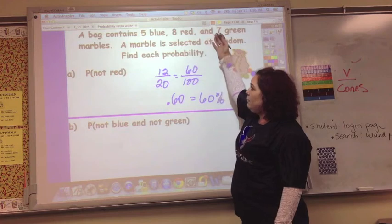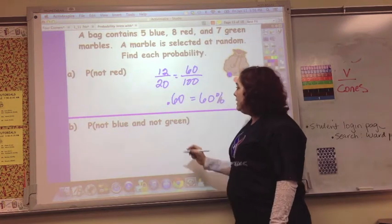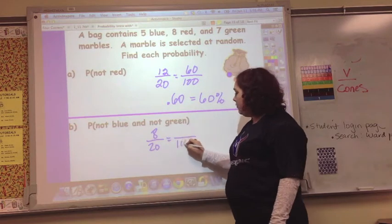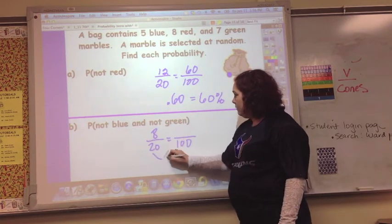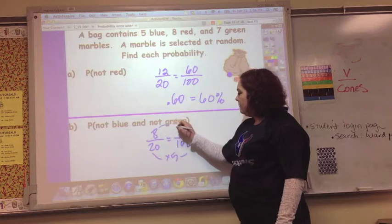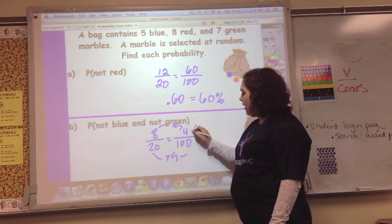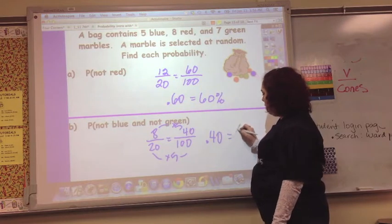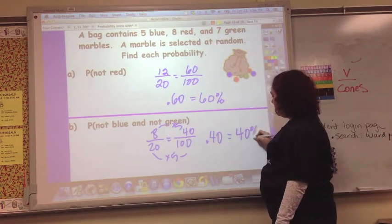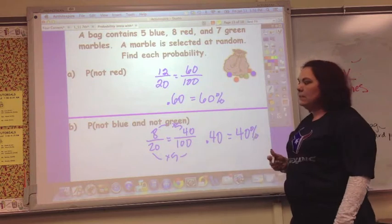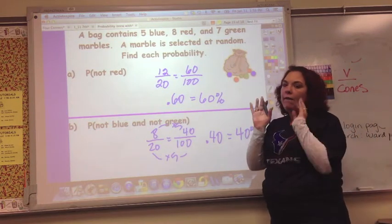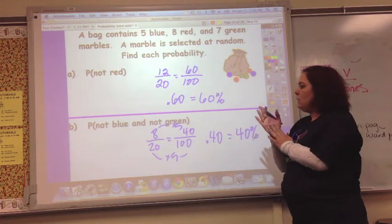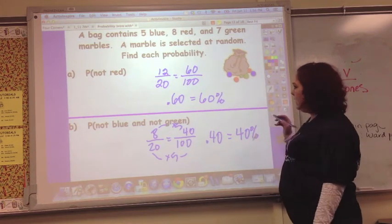And then what's the probability of not blue and not green, and so that would actually be the probability of red. And so that's 8 out of 20, and take that to 100, times 5, times 5 is 40. 40 hundredths, which is 40 hundredths, or 40%.